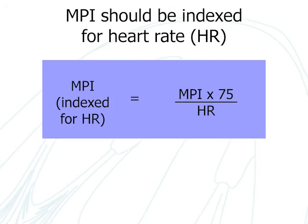Myocardial performance index should be corrected if the heart rate exceeds 100 or drops below 70 beats per minute. In order to index to heart rate, the measurement should be multiplied by 75 divided by the heart rate.